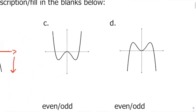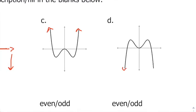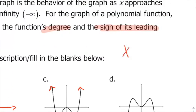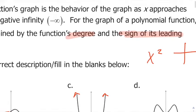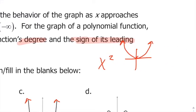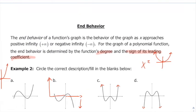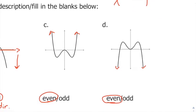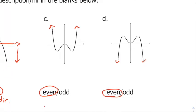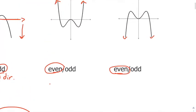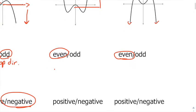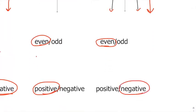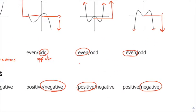These next two graphs both have ends going in the same direction. When both ends go in the same direction, we say these are even functions — kind of like an x-squared graph. I remember even and odd by comparing to x-squared or x-cubed: x-cubed goes in different directions, x-squared goes in the same direction. So we say even degree. As it goes right and up, we say it's positive; right and down means negative.